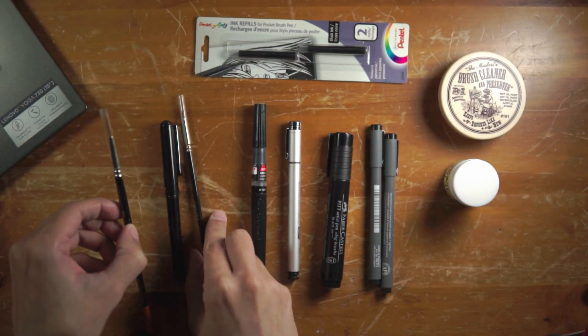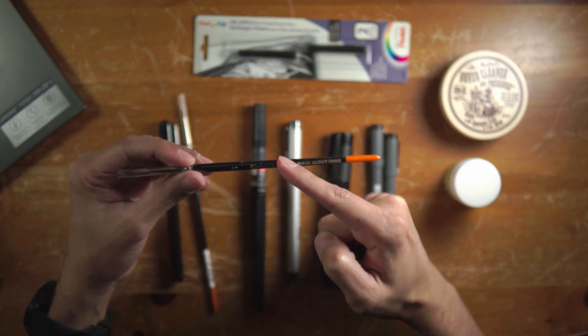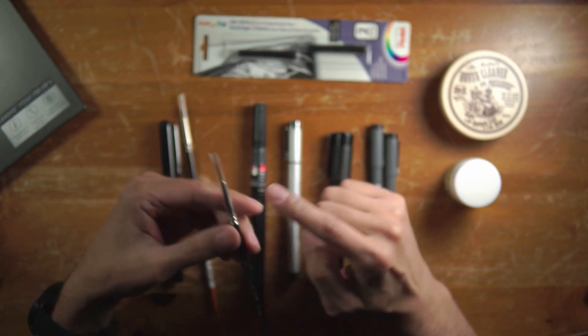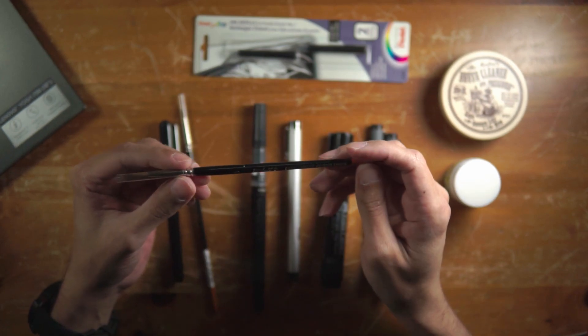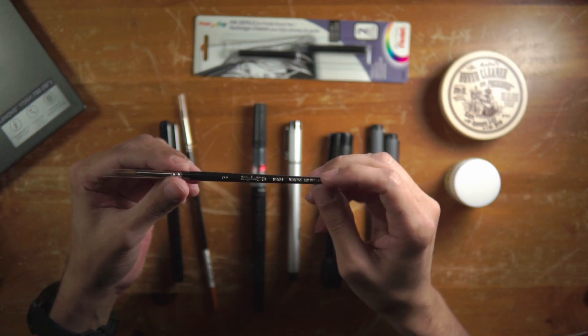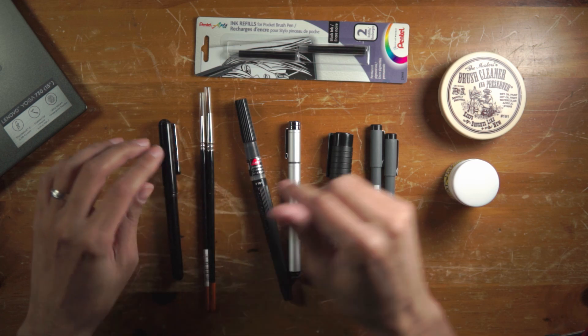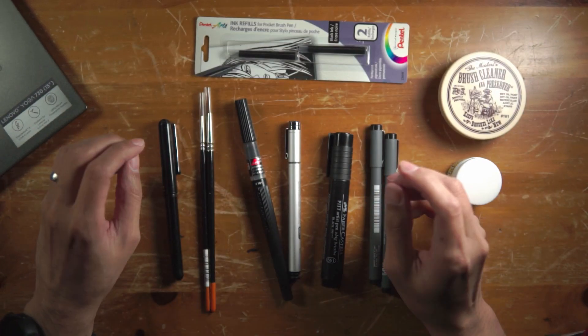And the number three, which is a much thicker brush, I will use for filling in large areas of black. Since it is a larger tip, I can easily use this to do line work as well, but I just tend to use two—one for line work and the other one for filling in black areas.